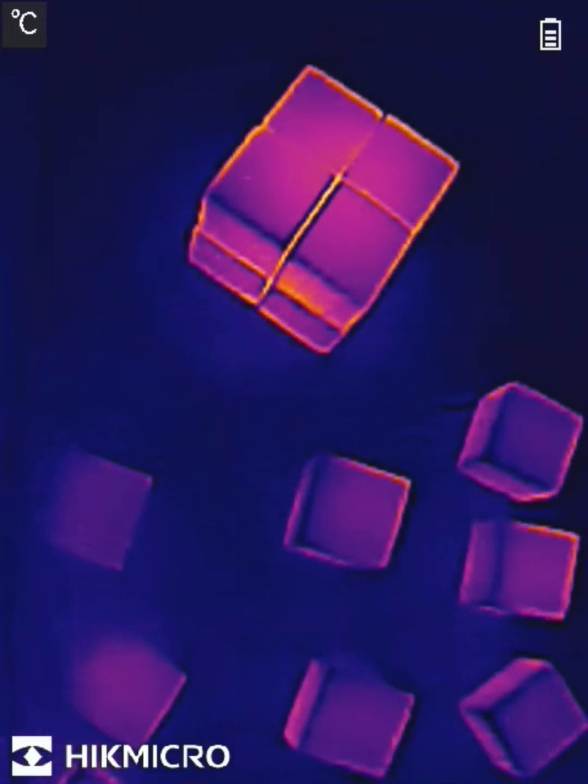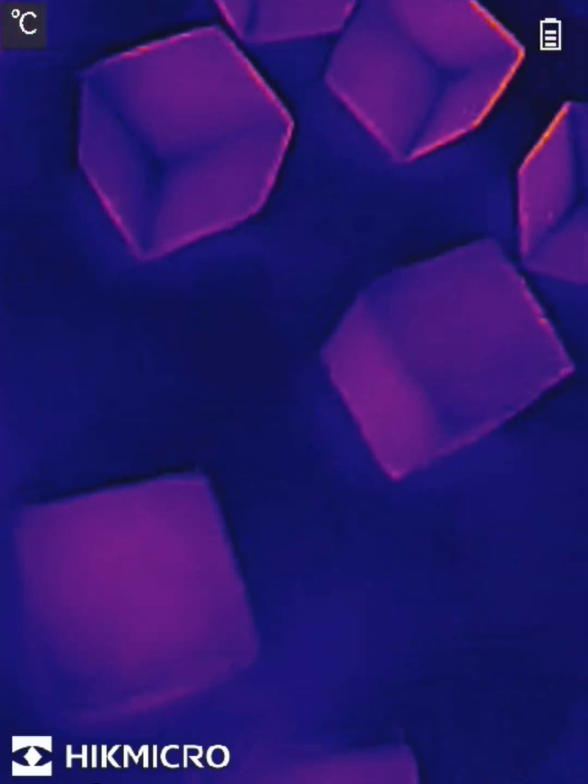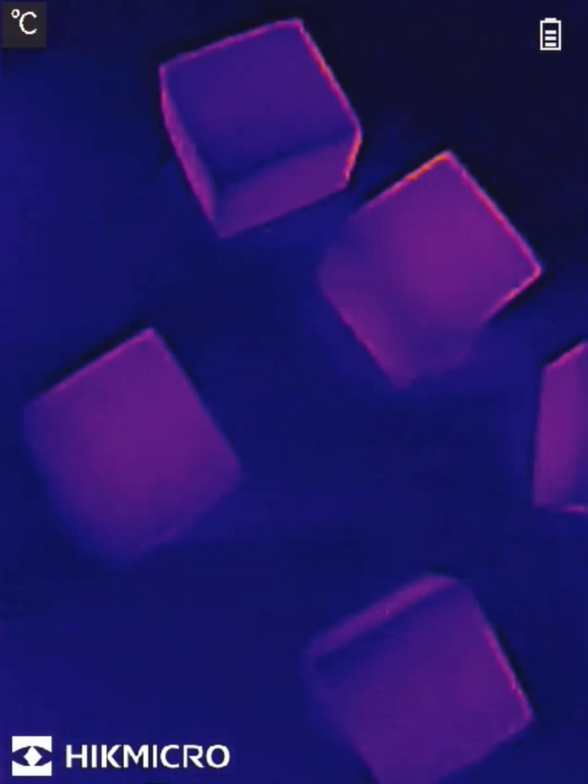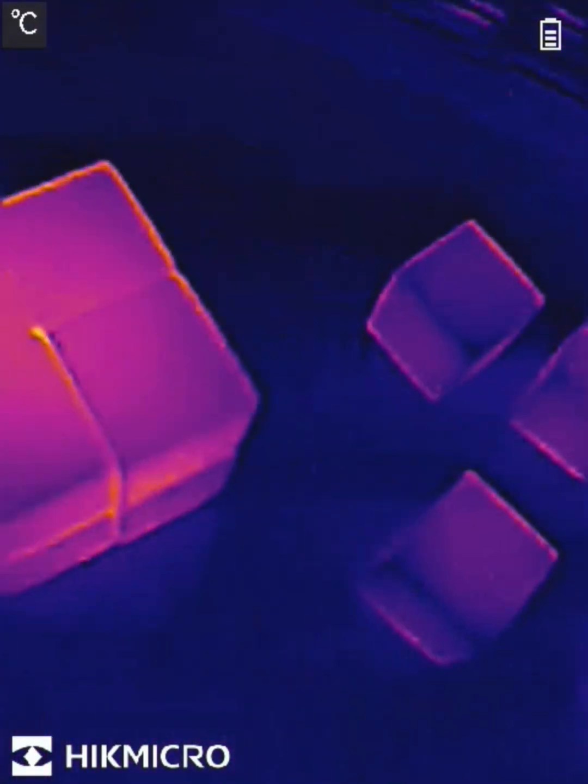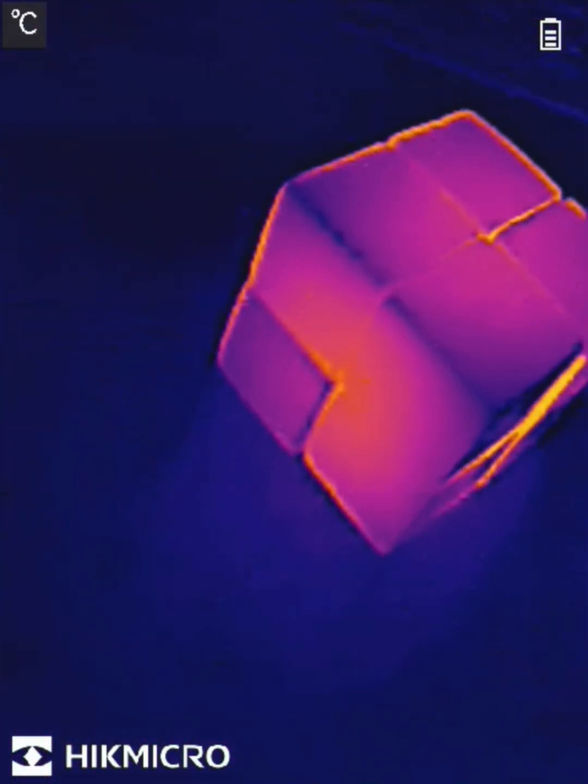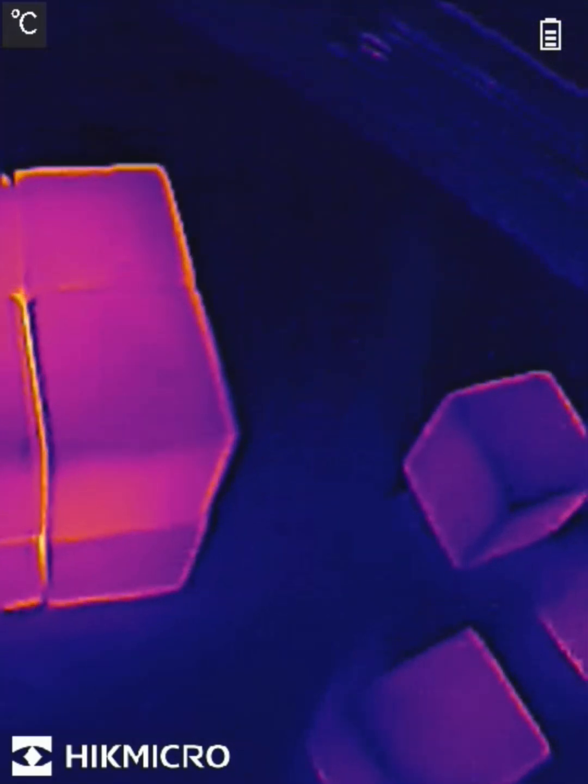If we now move the infrared camera around, we can see that the individual cubes have cooled down much more because of their larger total surface area than the 2x2 cube. Note that during the cooling, I sped up the video by 16 times. I hope you found this interesting.